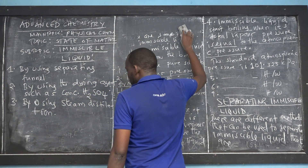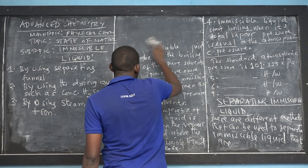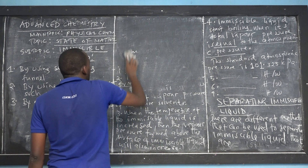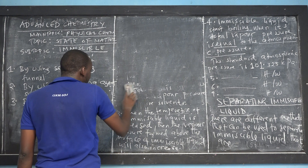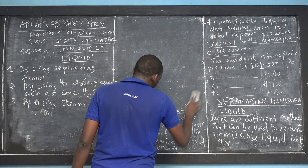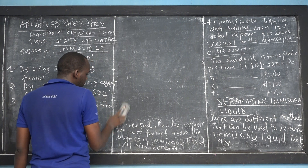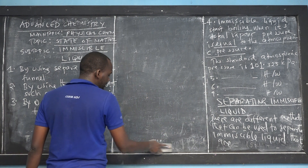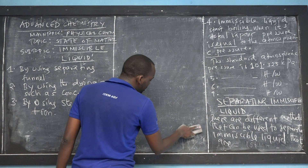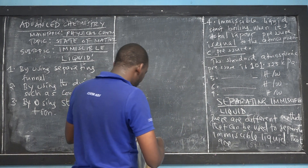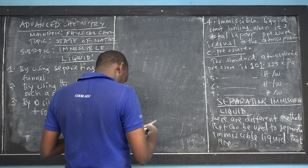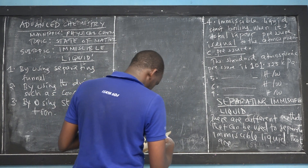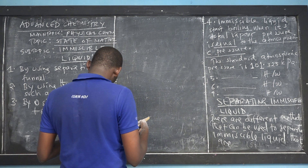The first method is called the separating funnel. You can find a funnel in a school lab or in a home chemistry lab, and you can separate immiscible liquids such as kerosene and water, or water and an organic solvent. The second method uses a drying agent — specifically sulfuric acid. The third method is steam distillation, using concentrated sulfuric acid as an example.